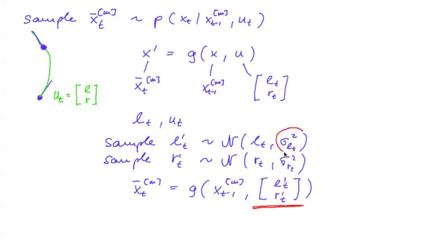but it is sampled according to a distribution, which is centered at the left and right control. So how do I determine the variance? And fortunately, we don't have to think about that. Because in the previous unit,